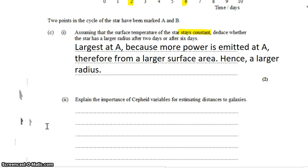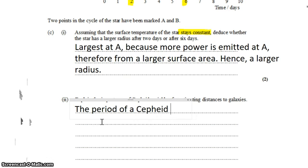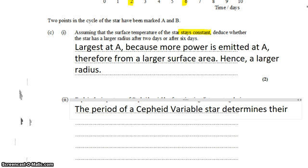Explain the importance of Cepheid variables for estimating distances to galaxies. Well, the nice thing about Cepheid variables is that their period is relatable, is dependent, determines their luminosity.